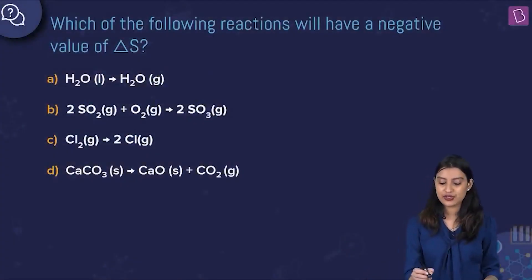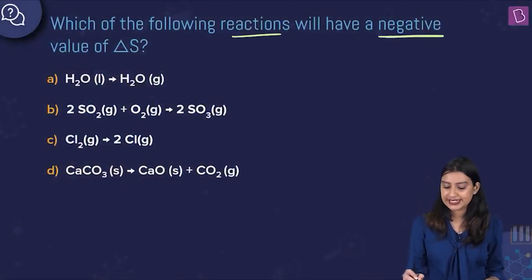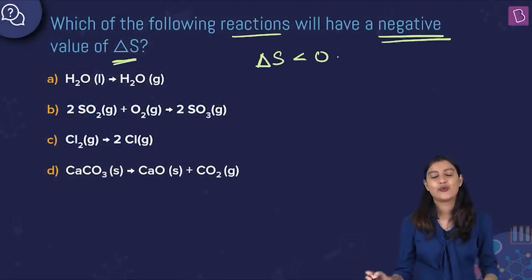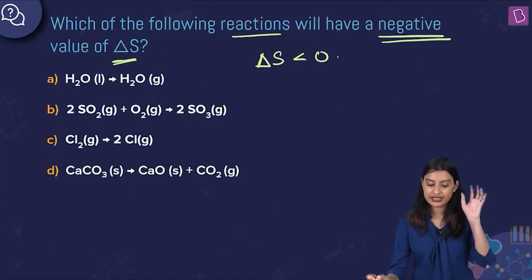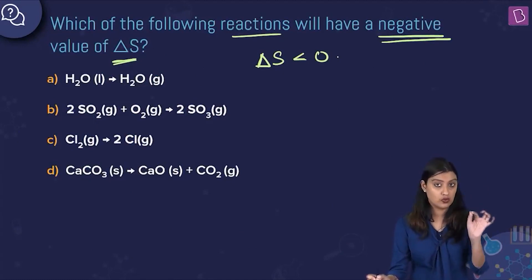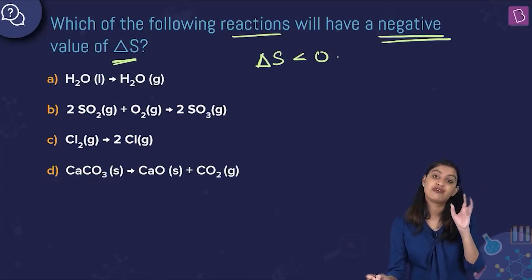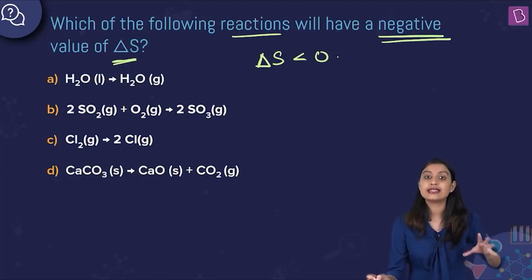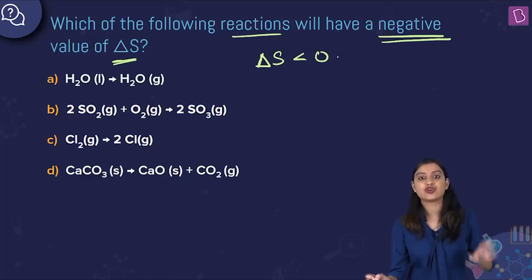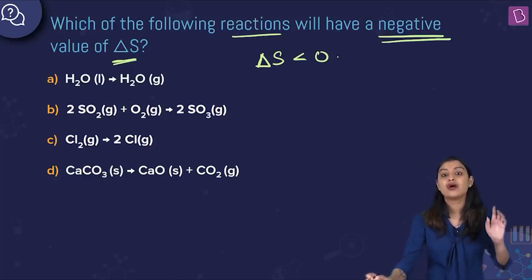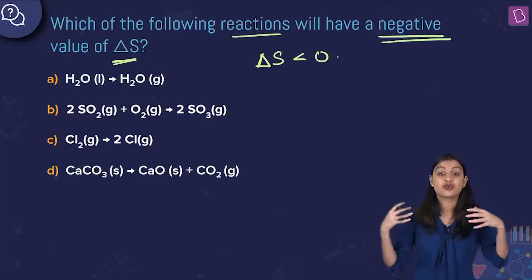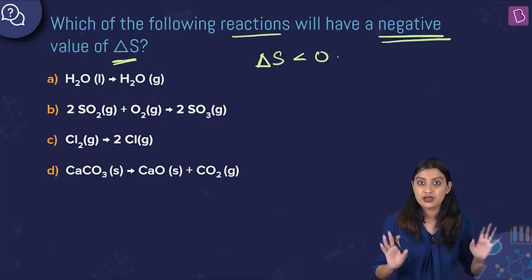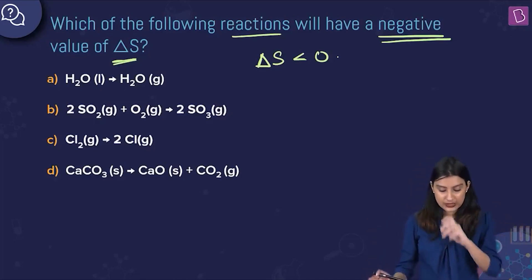Here they are asking which of the following reactions will have a negative value of delta S. Basically, delta S less than 0. If the number of moles before the reaction is greater than the number of moles after the reaction, then your entropy change will become negative, because as the reaction proceeds forward stoichiometrically, entropy will decrease.